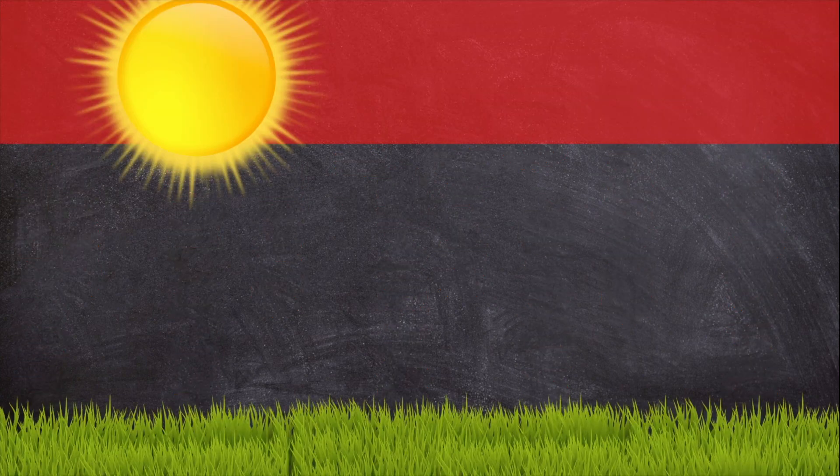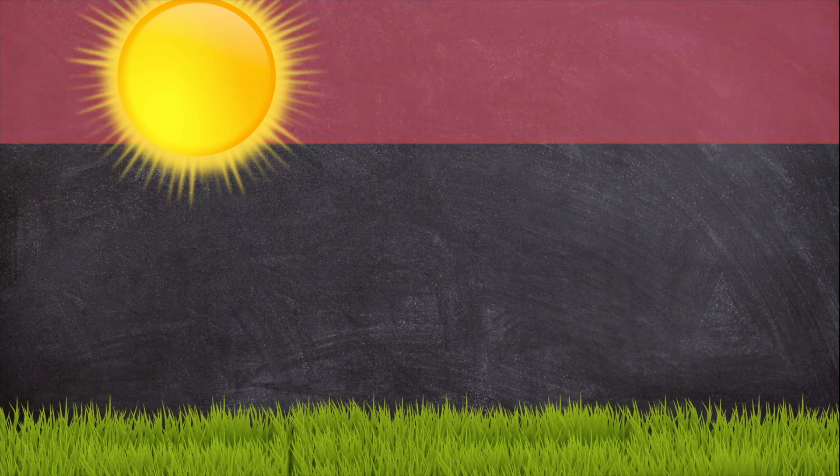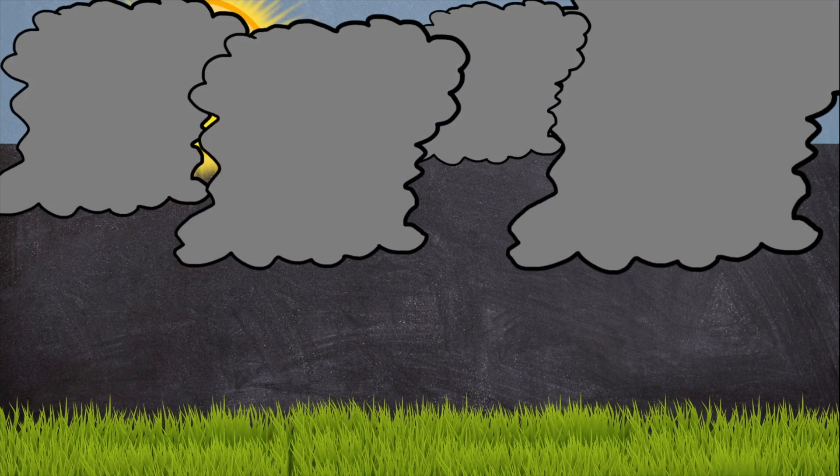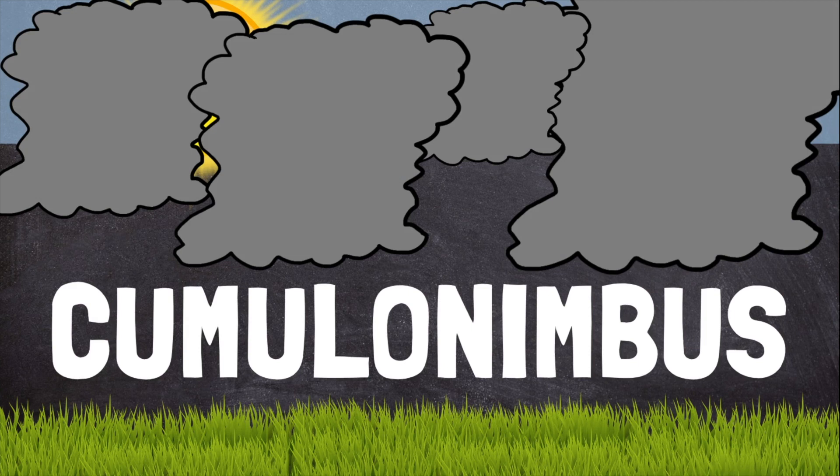Water molecules in the air condense as the air starts to cool. This forms those tall dark clouds we associate with thunderstorms. This type of cloud is called a cumulonimbus cloud.